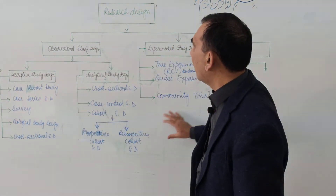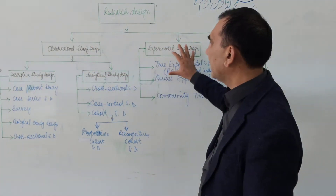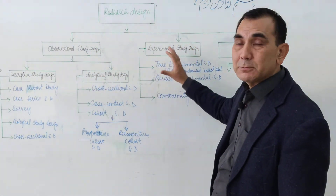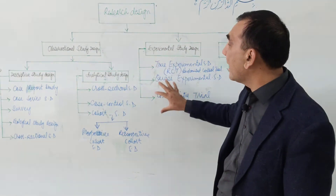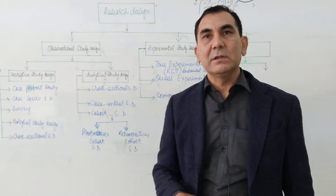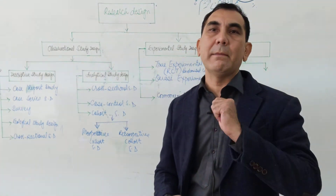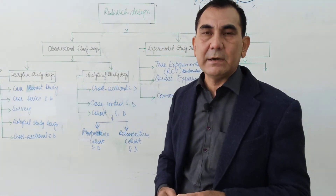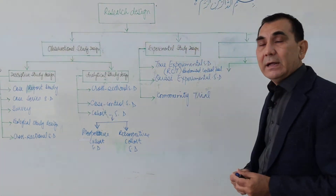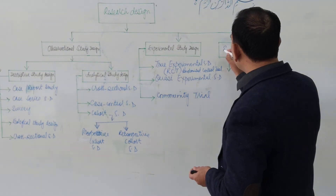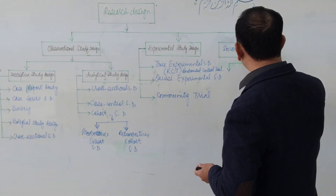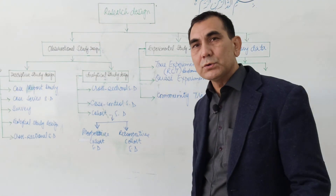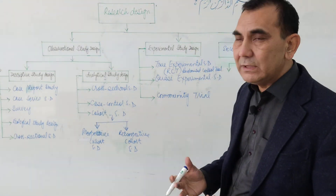These are all the types of research design: observational, experimental, descriptive, analytical, and various types of experimental study design. In all these research designs, the researcher collects primary data and then analyzes it. There is also another type of study design in which the researcher uses secondary data to prove a hypothesis or come up with a concrete conclusion.